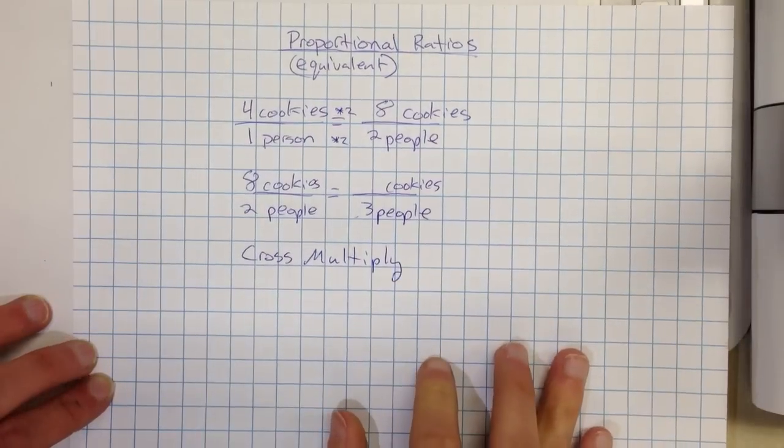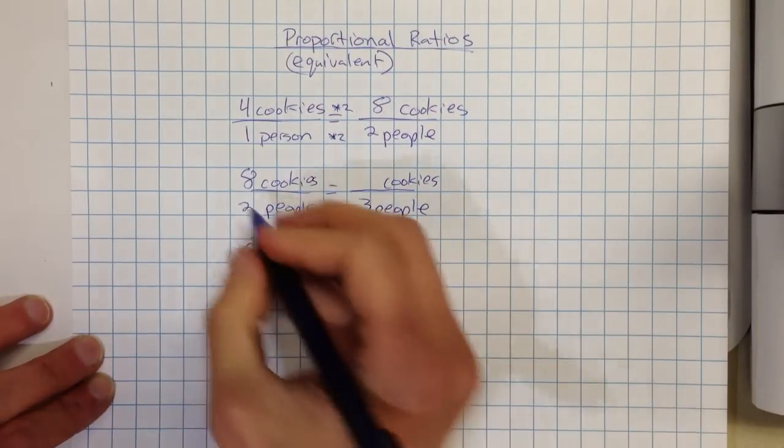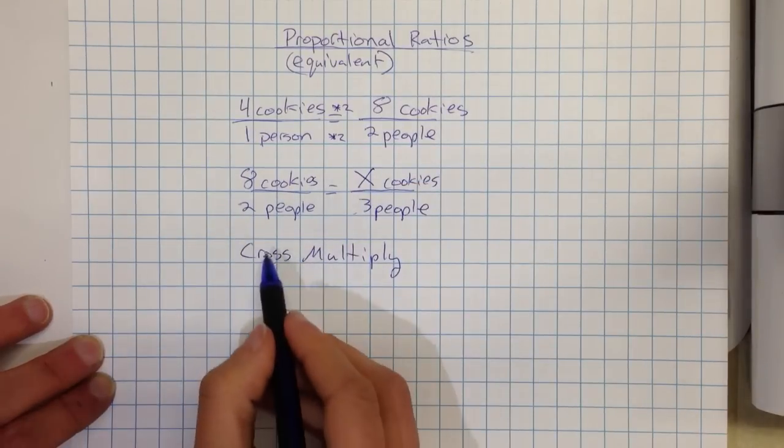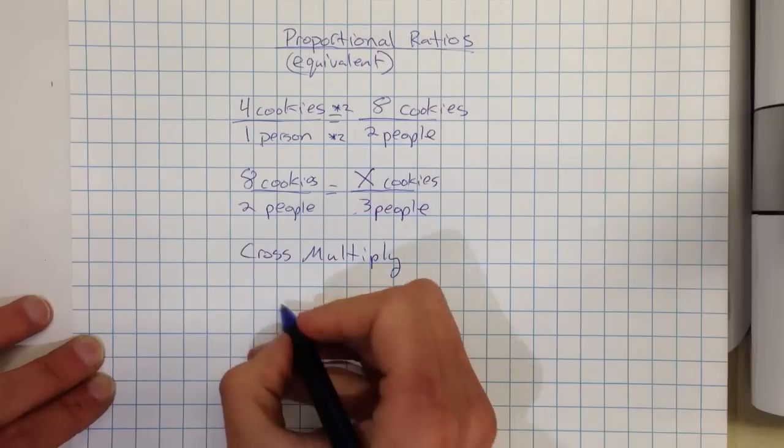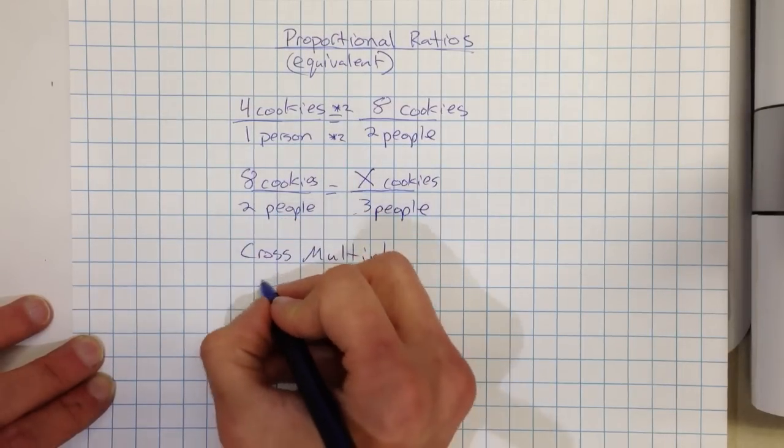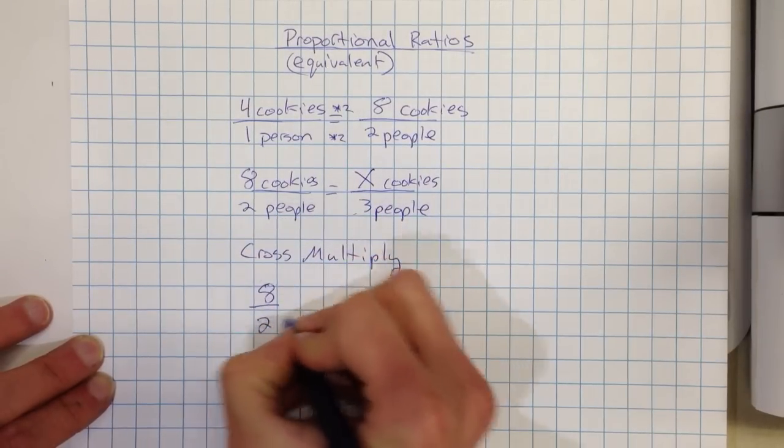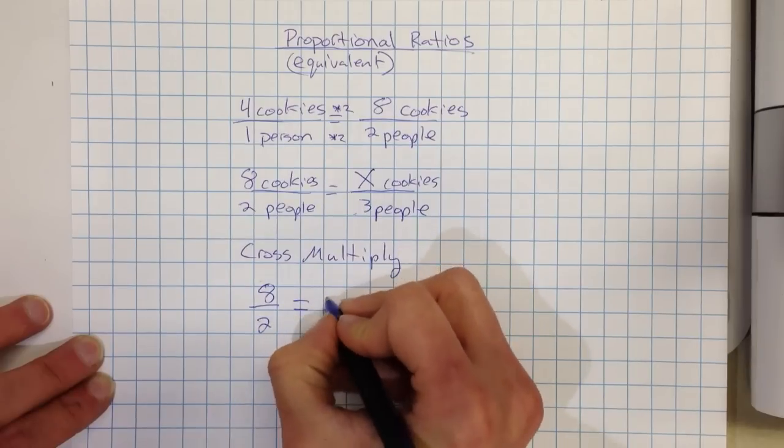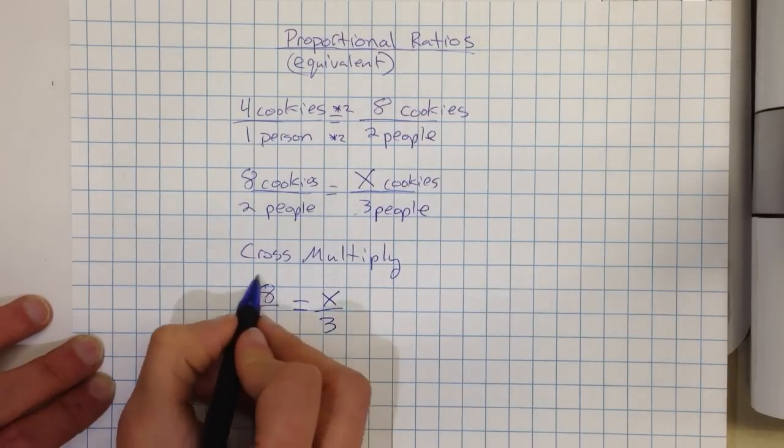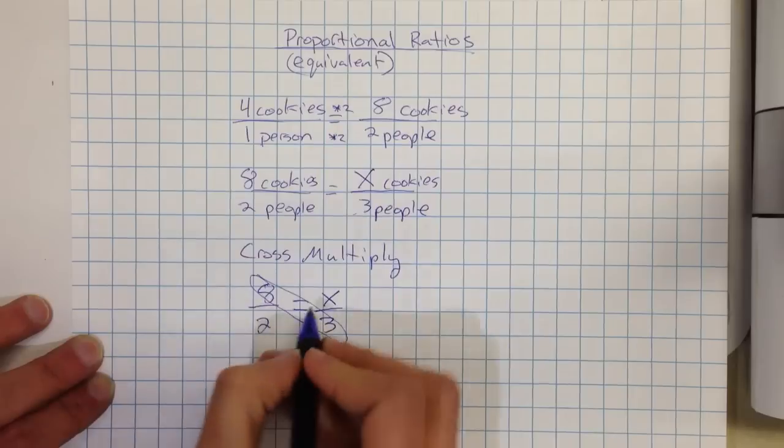So to cross multiply, what we do is we take two ratios that are proportional, and we're going to do simply what it says, cross multiplying. So I would write the problem, okay, so I have eight over two, and then I'm going to put my equal sign, and I have an X on the right side and a three down below.